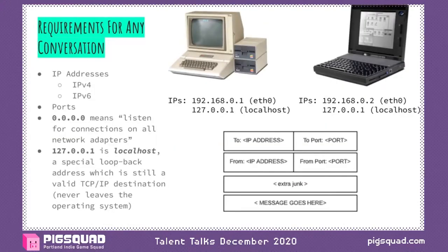Building off that: there are some requirements for any conversation for both UDP and TCP. Every packet that goes out on the lower levels needs a destination address, a destination port, and needs to come from an IP address and a port. This helps every piece of the network keep track of how to route messages. So for example, two machines on the network with different addresses — 192.168.0.1 and 0.2 — can talk to each other using those IP addresses.